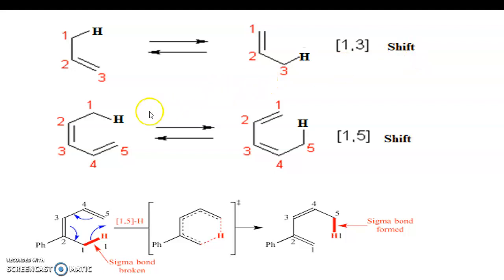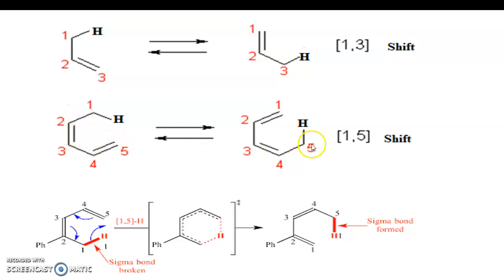Similarly, if we take the example of pentadiene, the hydrogen atom which is at position one comes to the fifth position. As soon as this hydrogen atom moves to this position, this bond shifts here and this bond shifts here, and we get the product. Therefore it is called a 1,5 shift, because the hydrogen atom which was at position one comes to position five after rearrangement.